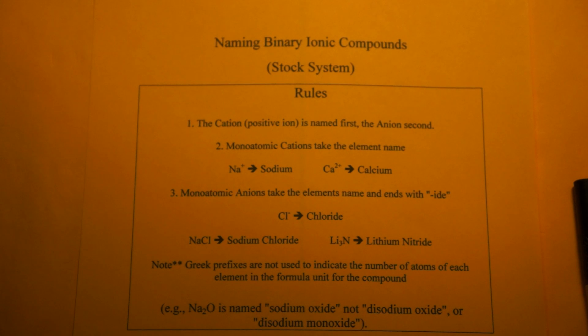Step number three, or rule number three: monoatomic anions, so your negative ions, take the element's name and you end it with "-ide". So the last name is going to end in "-ide". So Cl-, the negative ion, is going to end in "-ide", so chloride.